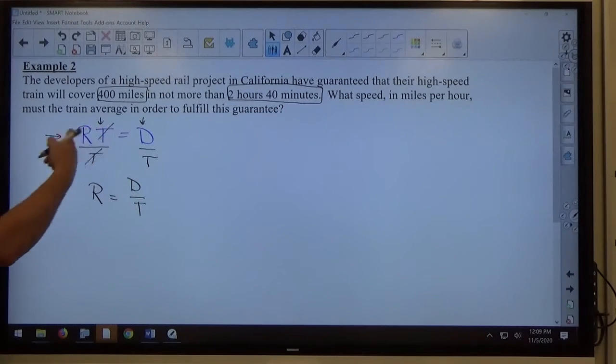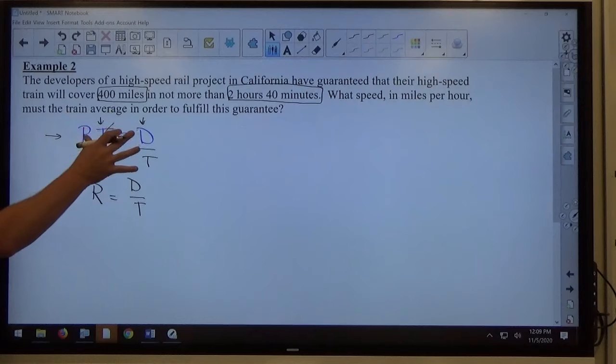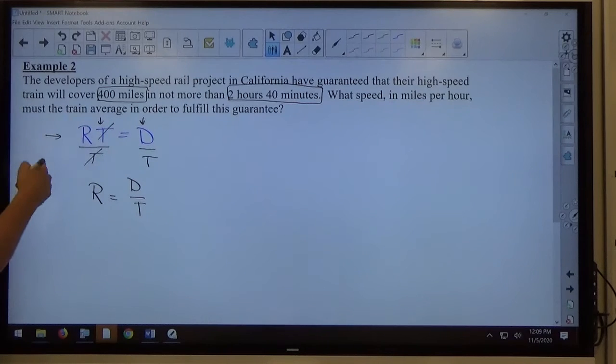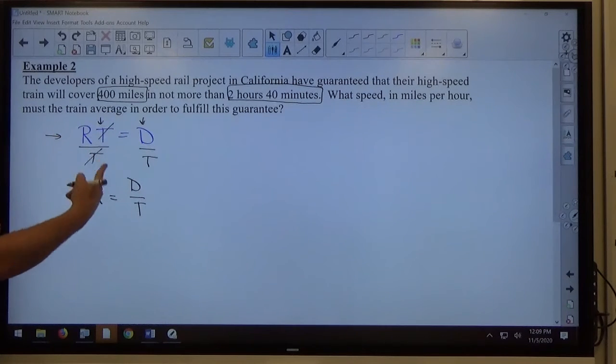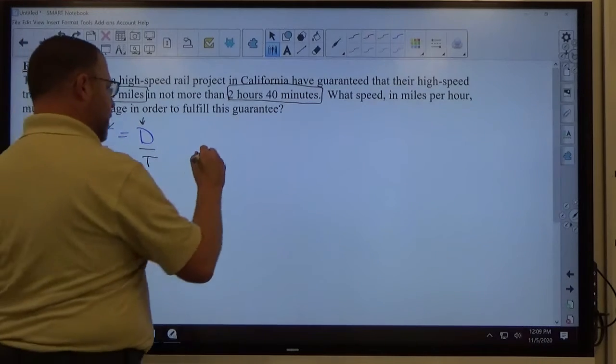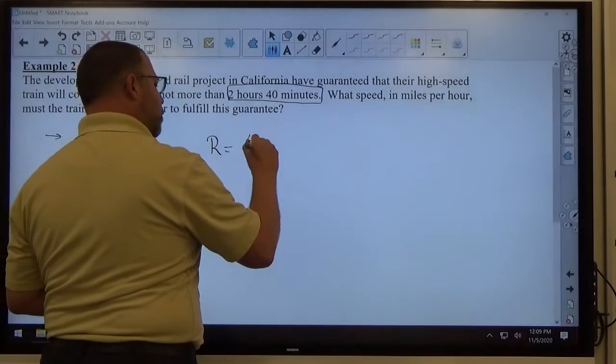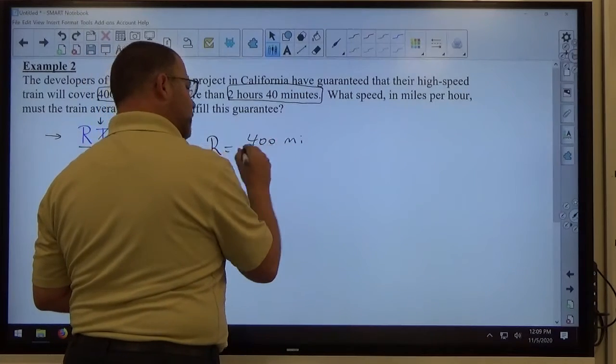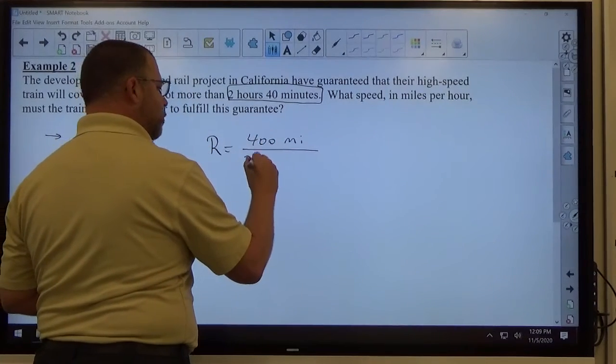This is a formula that we should know from algebra. If you don't, we'll learn it again, all right? So you want to know that formula, rate times time equals distance. It can be modified to make rate equals distance over time. Our distance is 400 miles, so rate equals 400 miles, and our time is 2 hours and 40 minutes.